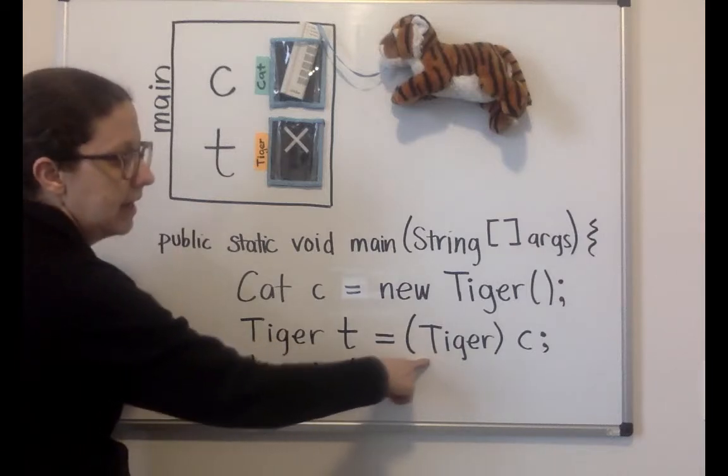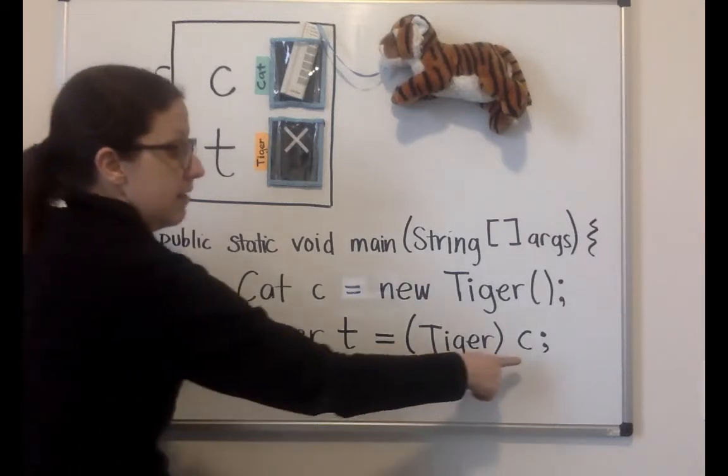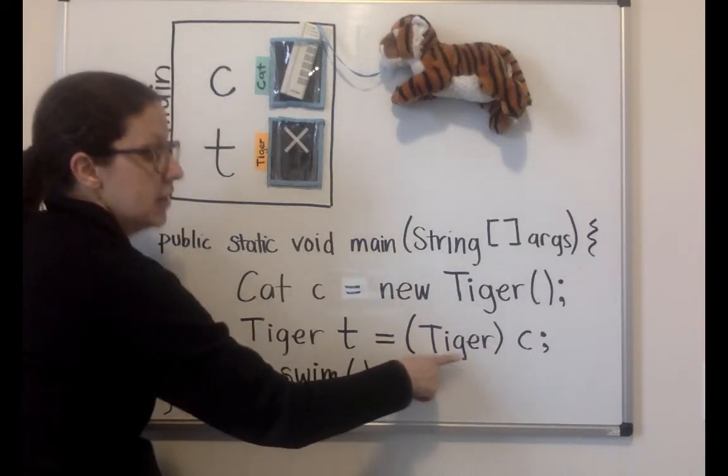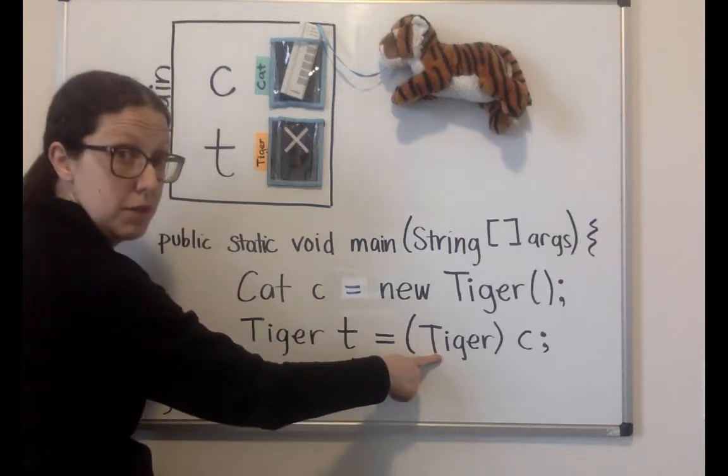Now what I'm saying here is these parentheses are important. The parentheses are saying I promise that the variable C is of type Tiger or a subclass. This is what's called a cast when I put it in parentheses.